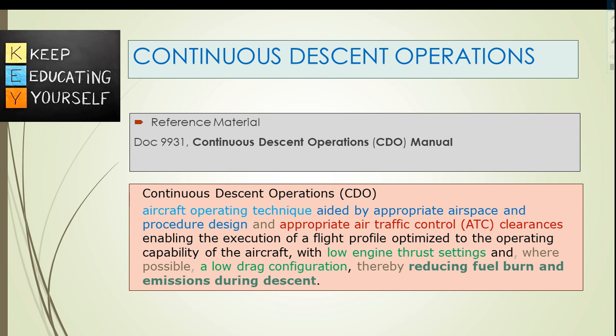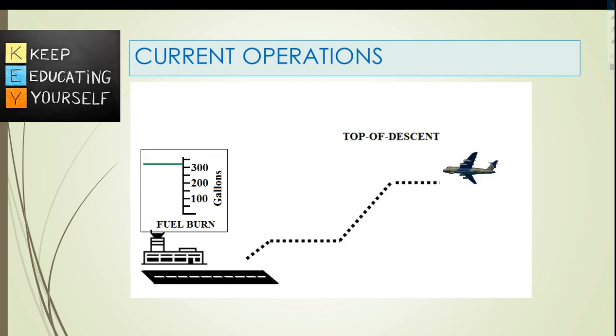Reference material: Doc 9931, Continuous Descent Operations (CDO) manual. CDO is an aircraft operating technique that needs appropriate airspace and procedure design and ATC clearances, which helps in the execution of an optimized flight profile. The aircraft operates with low engine thrust and low drag configuration, helping to reduce fuel burn and emissions during descent.